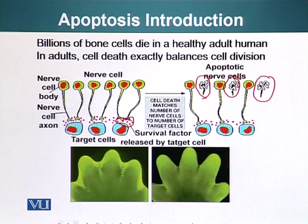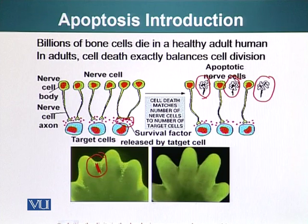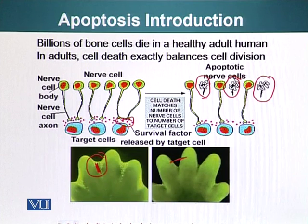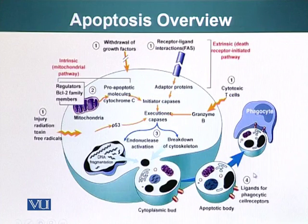Initially when we start out we have webbing between our fingers — this is a mouse embryo, but humans also have this webbing. The cells that reside between the fingers go through apoptosis so our digits are able to separate. Additionally, humans also have a small tail during a certain stage of embryonic development, which we get rid of through apoptosis as well.